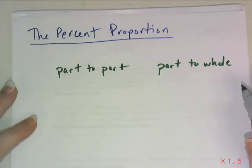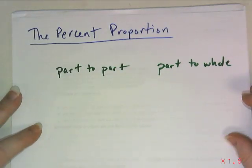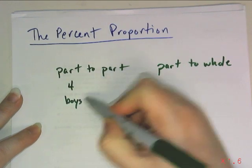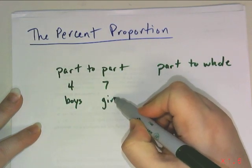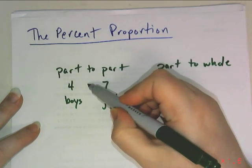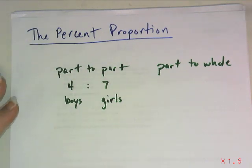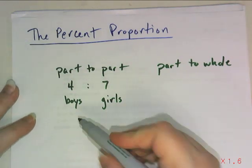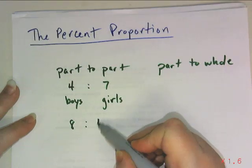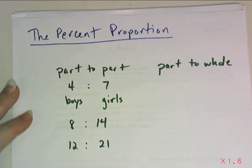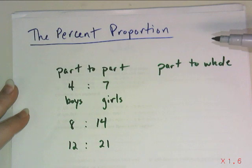First, a quick example. A part-to-part ratio might say something like, there are four boys for every seven girls in math class today. Now, four to seven is our part-to-part ratio. That doesn't mean there are only four boys and only seven girls. Perhaps we started with eight boys and 14 girls, or 12 boys and 21 girls, but that's a really big class, so I hope not.